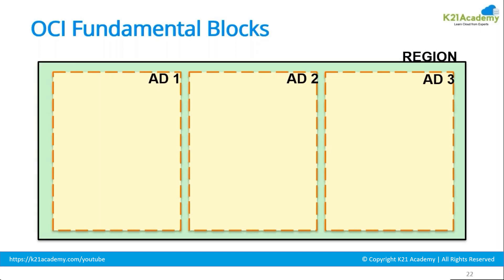A region can have up to three data centers or it can have just one data center. Right now Oracle is creating most regions with a single data center. However, Oracle has got four regions — Frankfurt, Ashburn, London, and Phoenix — where you are going to see multiple data centers available in that region.